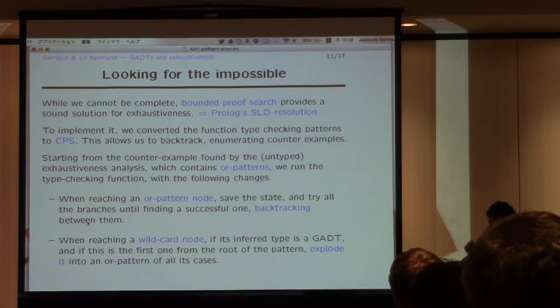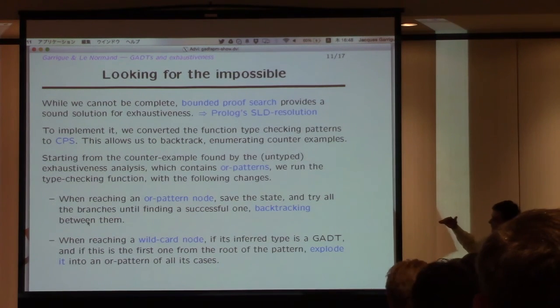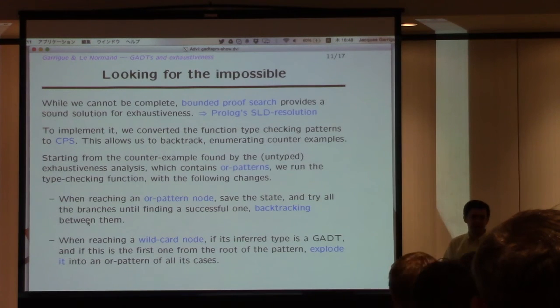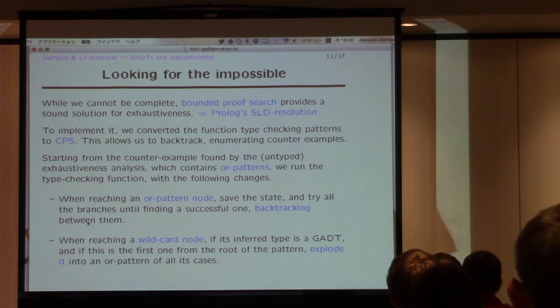And the other thing, we are going to want to do proof search, so when it reaches the wildcard, what it's going to do, it looks at the wildcard. And if the type is a GADT, it's going to basically explode the GADT into all its cases. And again, backtrack between the different cases. So you can do an exhaustive proof search.